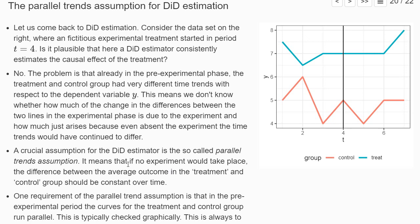The parallel trends assumption means that if no experiment were to take place, the difference between the average outcome in the treatment and control groups should be constant over time. So the difference between the blue and the red curve should be constant — it will never be exactly constant, but it should be systematically constant with only random fluctuation. It should move nicely in parallel. We can at least check in the phase before the experiment whether these curves run mostly in parallel or not.